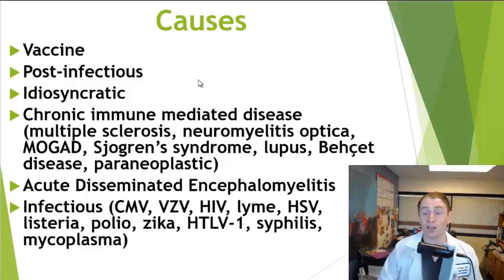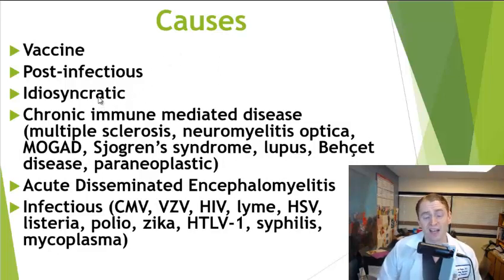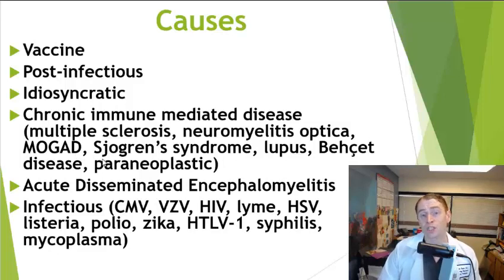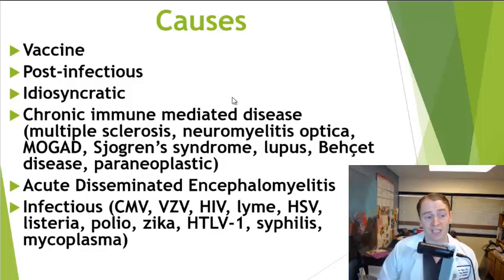Sometimes it can be idiosyncratic, meaning we just don't know the cause, and sometimes it can be part of a chronic disease — the most common by far being multiple sclerosis. It's also associated with other autoimmune diseases of the nervous system such as neuromyelitis optica, or myelin oligodendrocyte glycoprotein-associated disease (MOGAD), or systemic autoimmune diseases such as Sjögren's syndrome, lupus, or Behçet's disease.